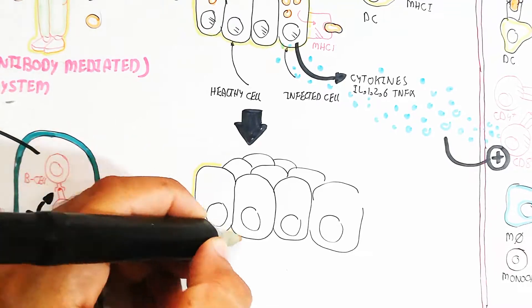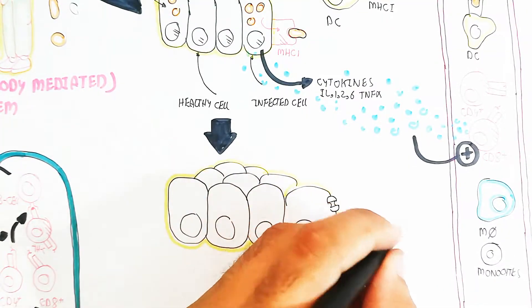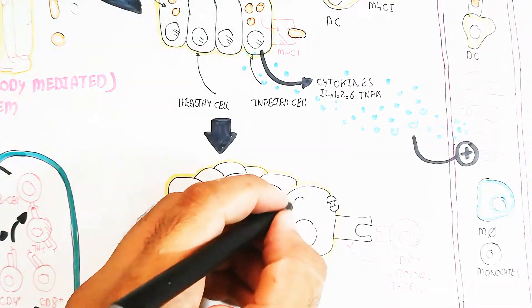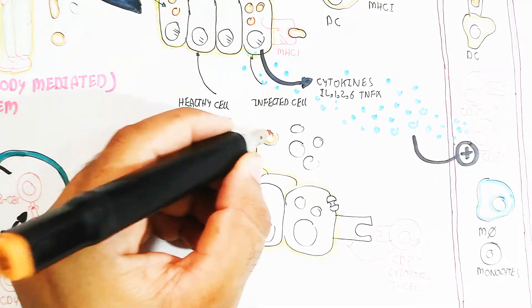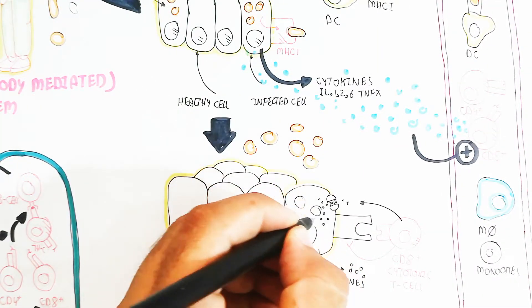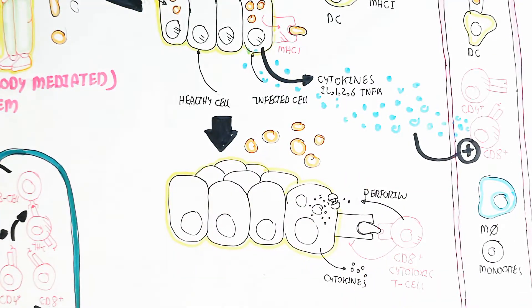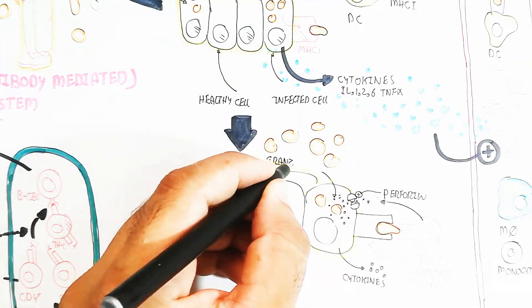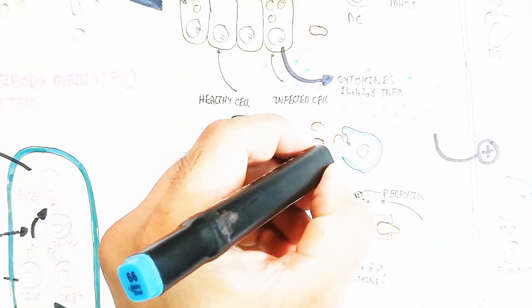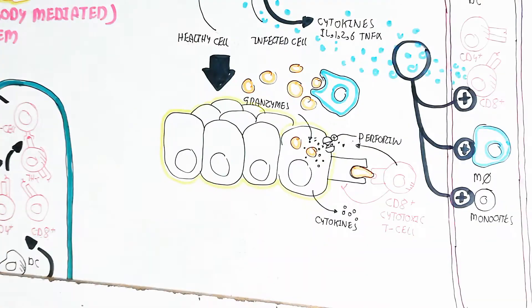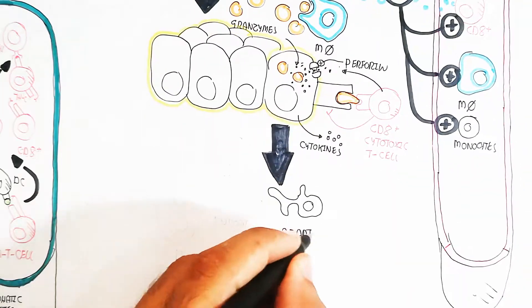The infected cell acts as an antigen-presenting cell, displaying antigen via MHC class II molecule. The CD8 cytotoxic T cell recognizes this antigen. Cytokines are also produced from the infected cell. The CD8 T cell produces perforin, a channel-like protein that binds to the infected cell to create a pore. Through this pore, granzyme is released from the CD8 T cell into the infected cell to damage it. Cytokines also recruit more CD8 T cells and macrophages and monocytes.